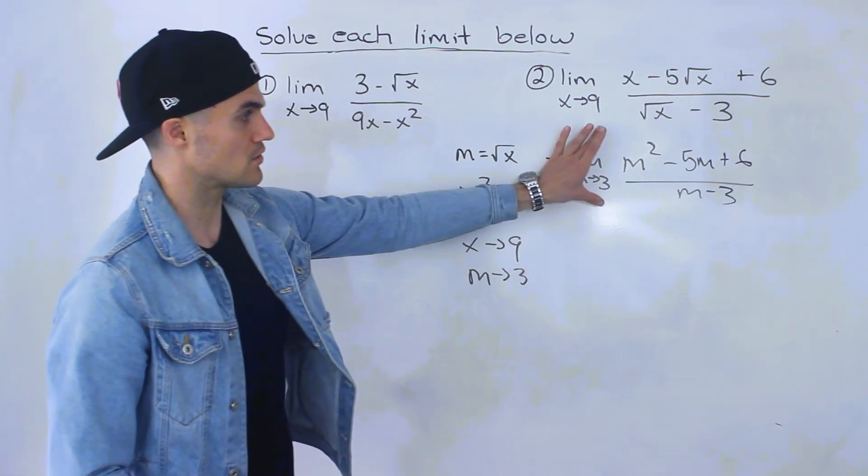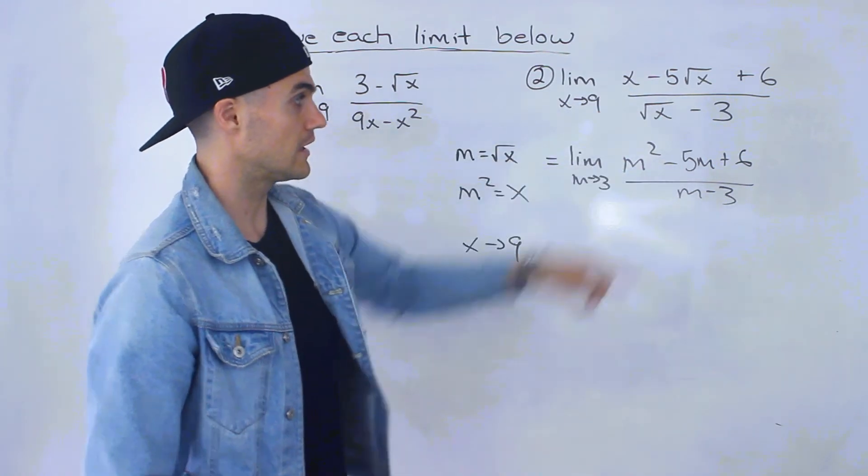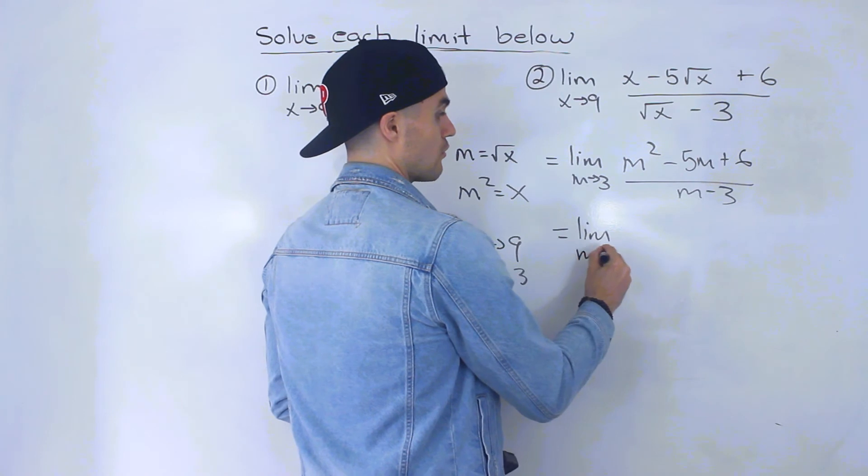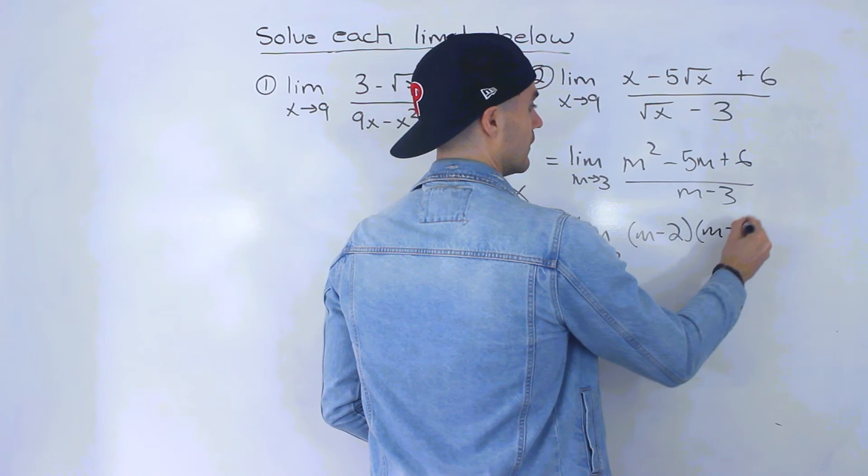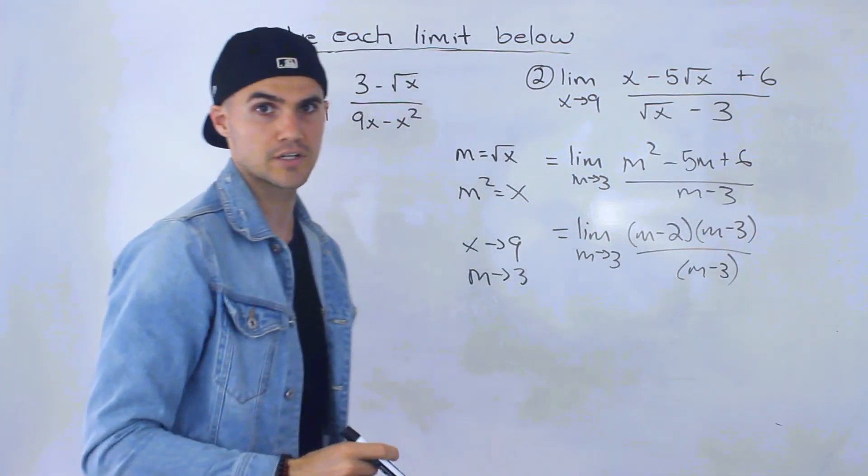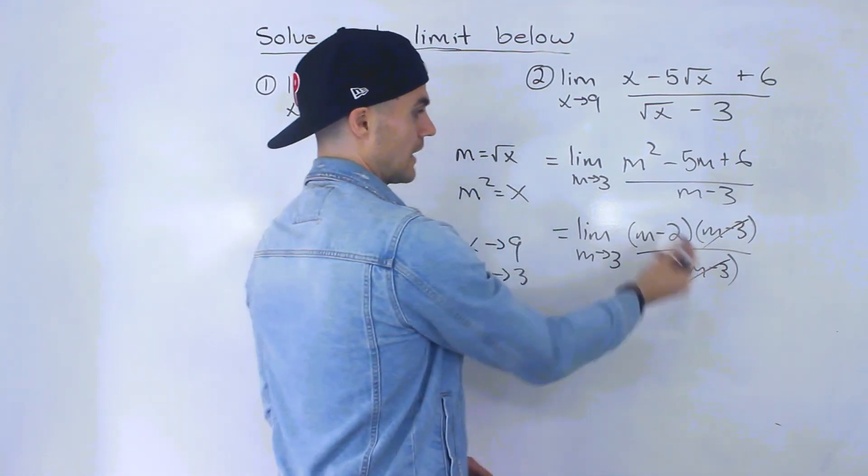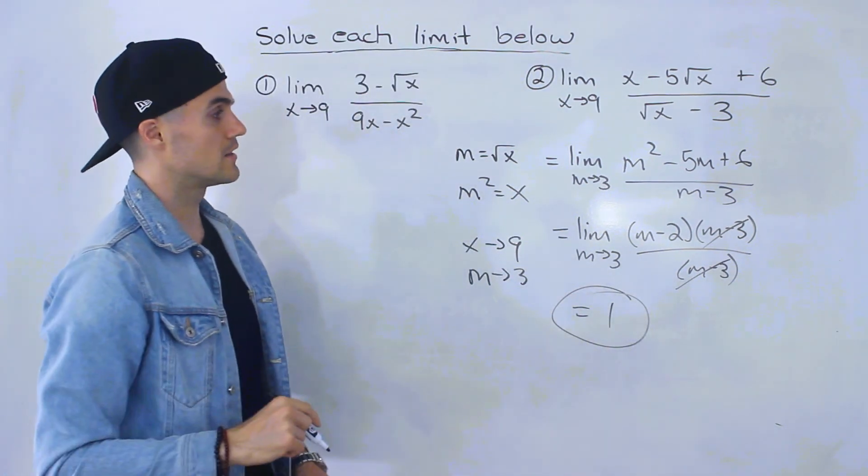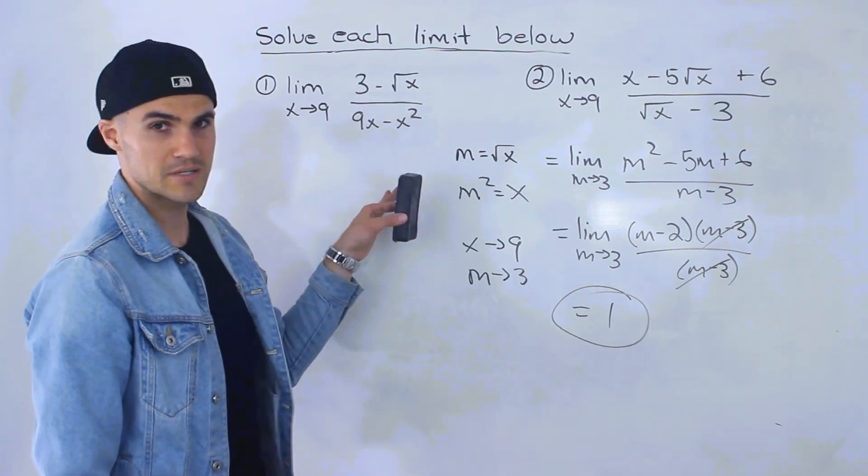Look how much nicer this limit is to work with. From here, it's obvious we can factor that numerator as (m minus 2)(m minus 3). Without the substitution, it's tougher to tell. These cancel out. Now we plug in 3 for m and get positive 1, the same answer as the first method.